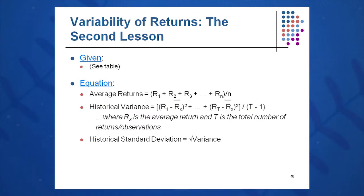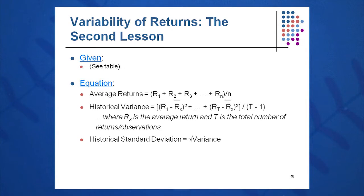Simply to get the average, I add up all the returns and divide by N. So if I have four returns, I add them all up and divide by four to get the average. The variance is the sum of the squared deviations divided by T minus one observations.